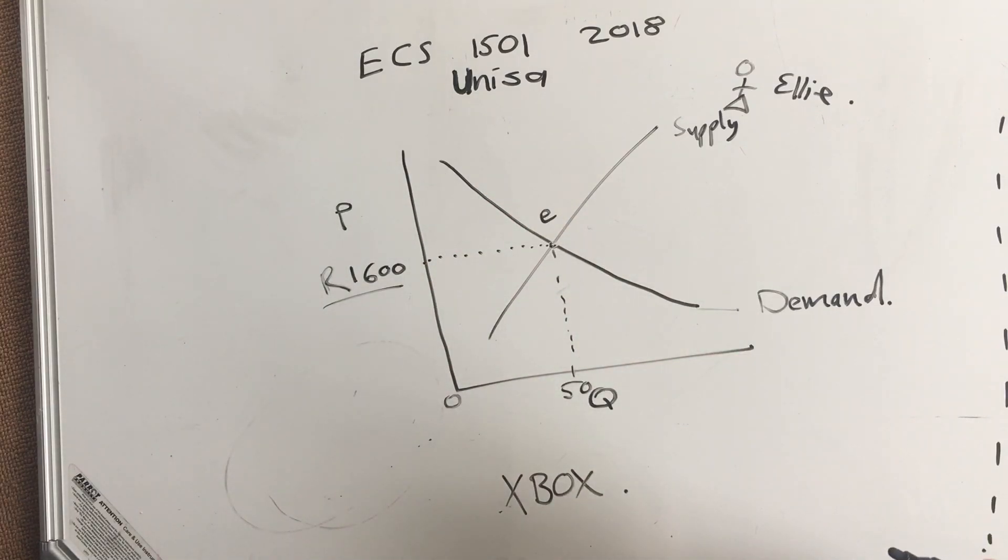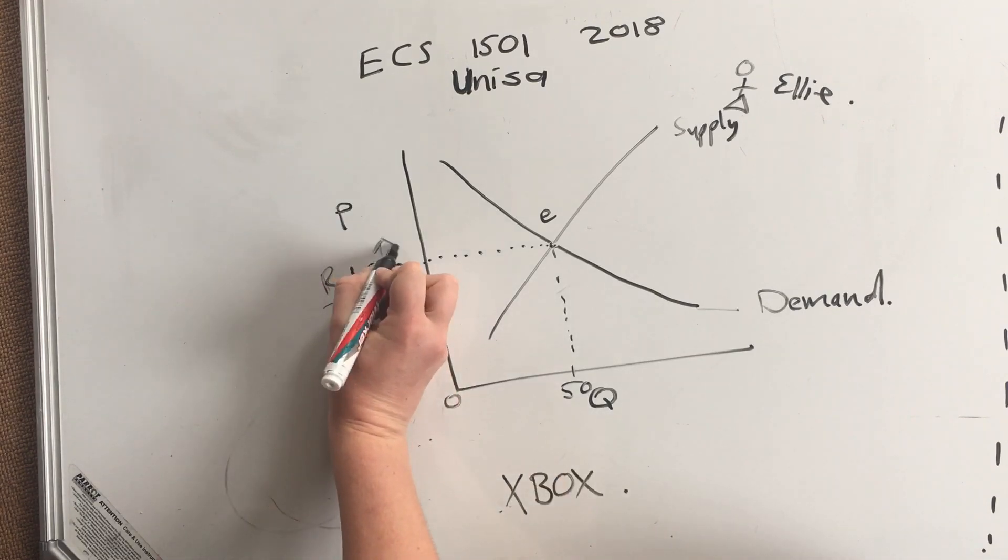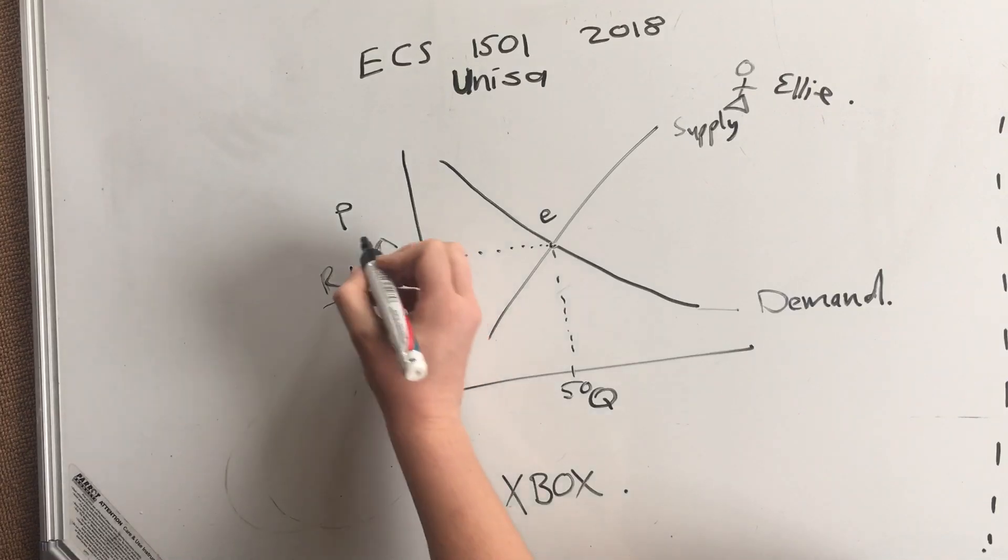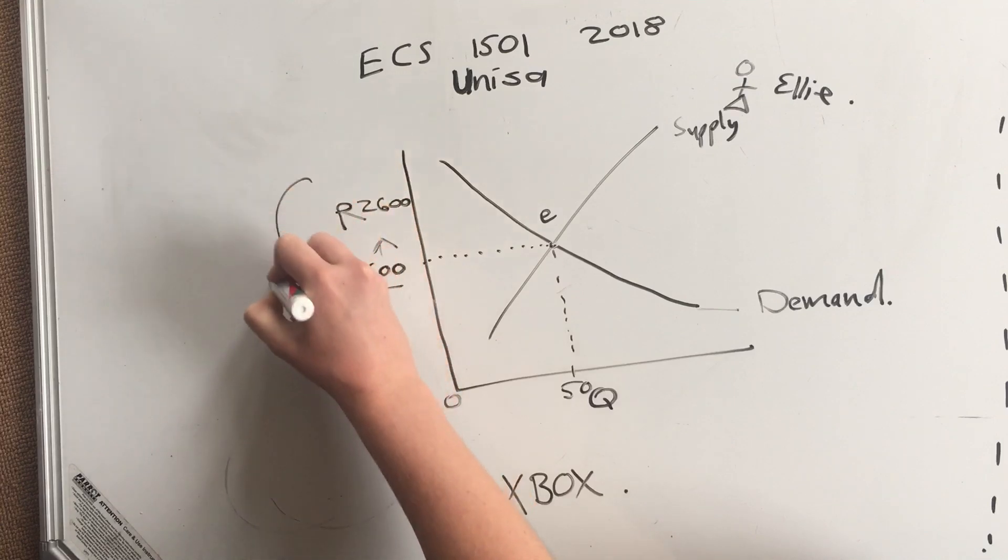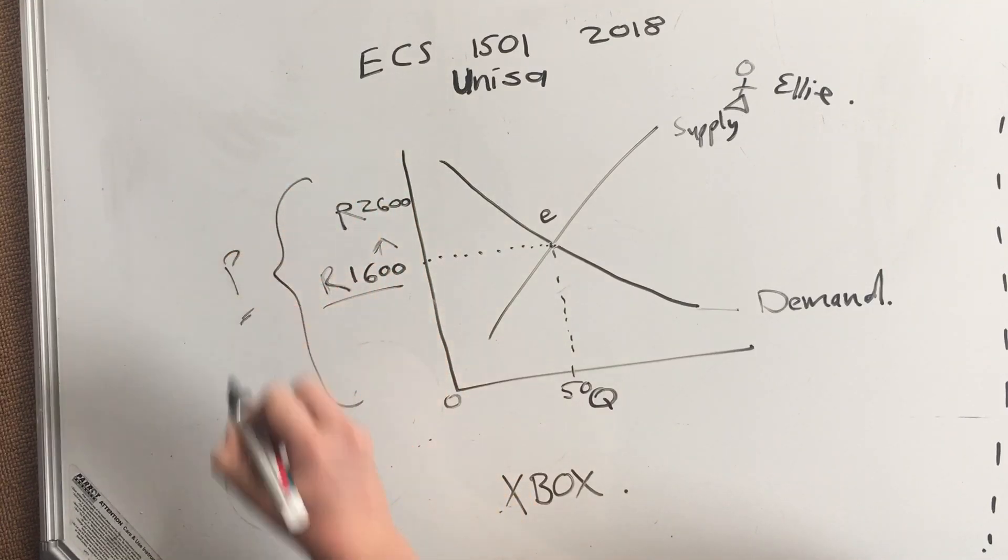Now let's say we move the price of this Xbox up to 2600 rand. Okay, let's make the price there 2600 rand—over here it is still a P for price.